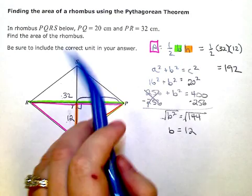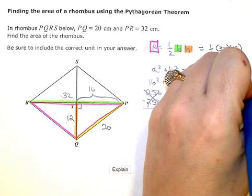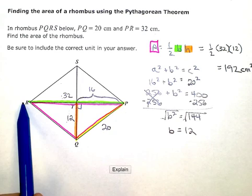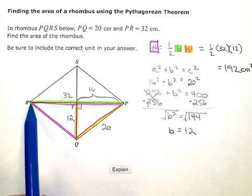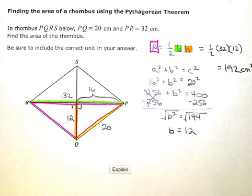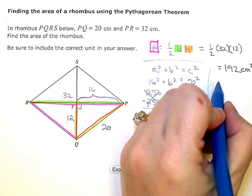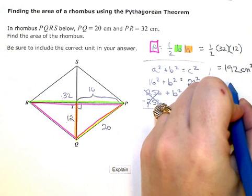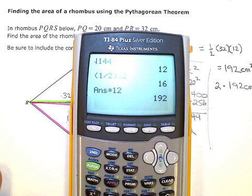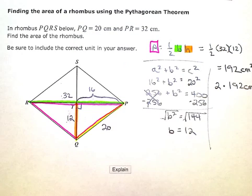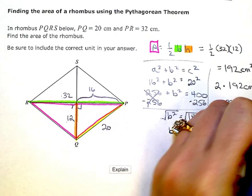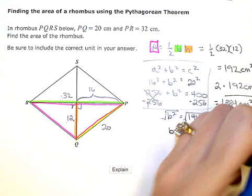And our units were centimeters, so the area is going to be centimeters squared. Now that's just one big pink triangle, so now if I want the whole rhombus, I have to double that. So 2 times 192 centimeters squared will give me the whole rhombus, so 384 is the area of my entire rhombus.